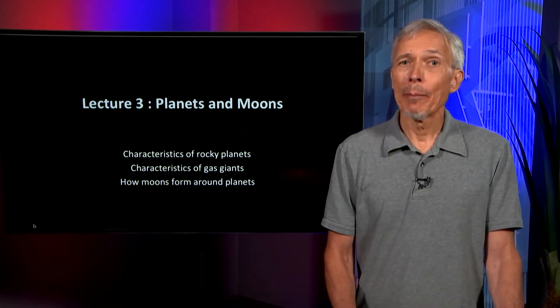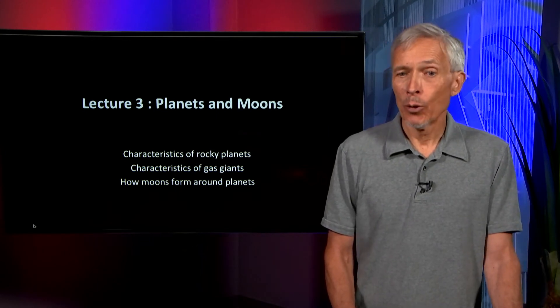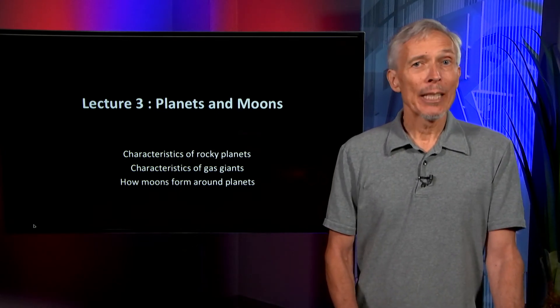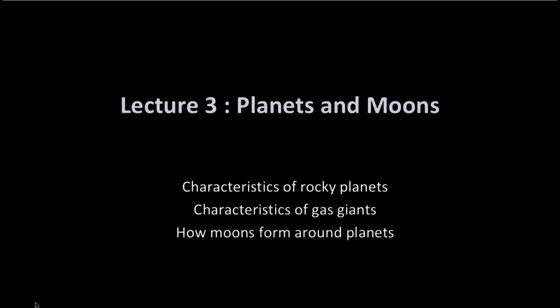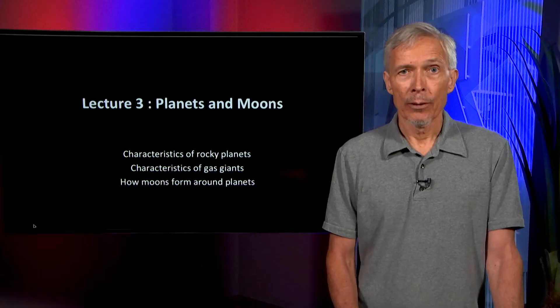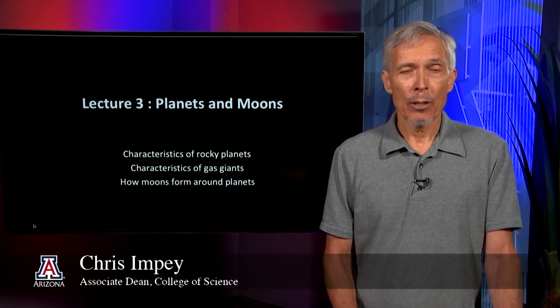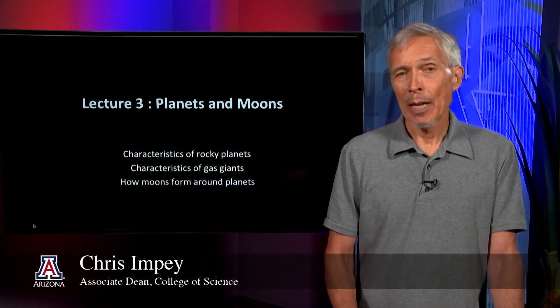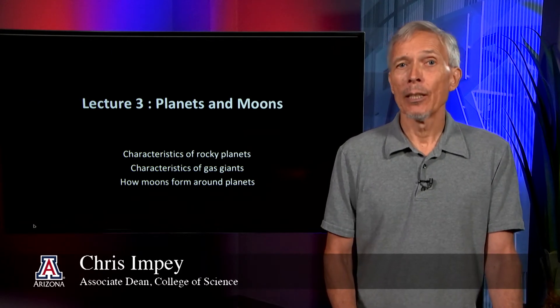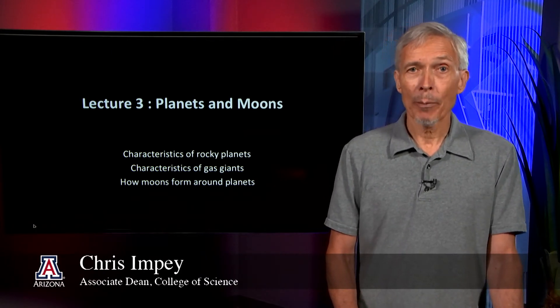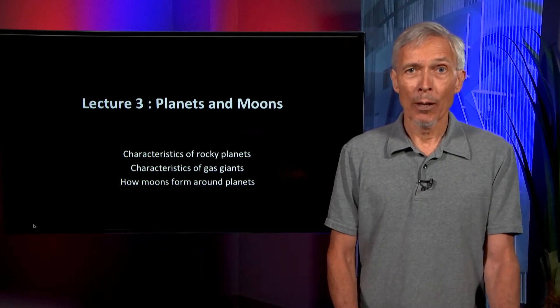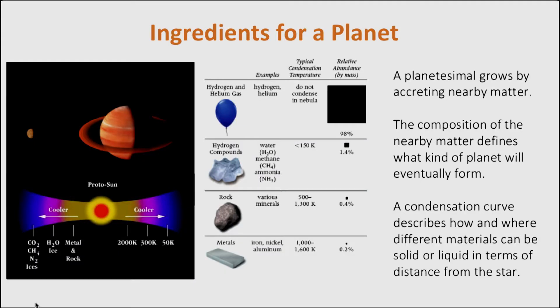In this lecture we'll talk about planets and moons. We'll look in more detail at the characteristics of rocky planets and of gas giant planets, and we'll talk about how moons form around planets and what their properties are. All of this is with reference to the solar system, but with the expectation that we will be talking about these properties for exoplanets as well.